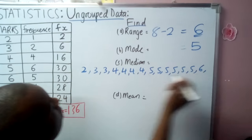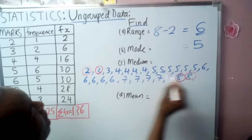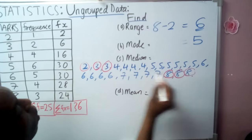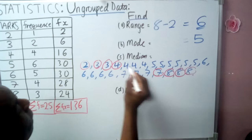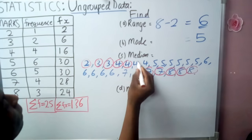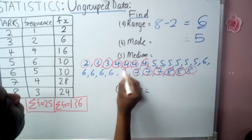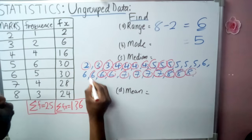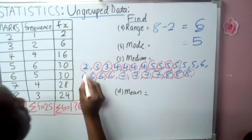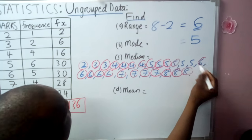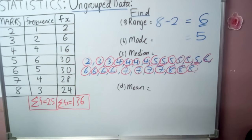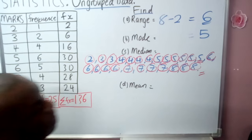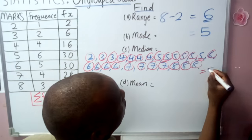Now, after having all our data listed, then we start canceling one by one until we get the middle data. And finally, our middle data will automatically be our median. And hence, our median here will be 5.